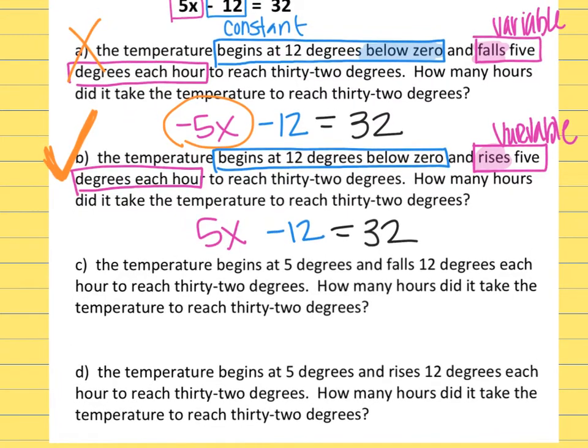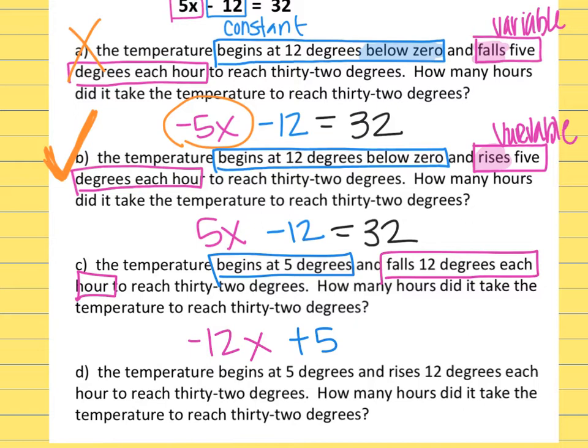And C says the temperature begins at 5 degrees. That's my constant, so I would say it begins at 5 degrees. And then it says it falls 12 degrees each hour. So that would be my variable and falls means it's negative, and a total of 32. So this time both of these were wrong on that one.